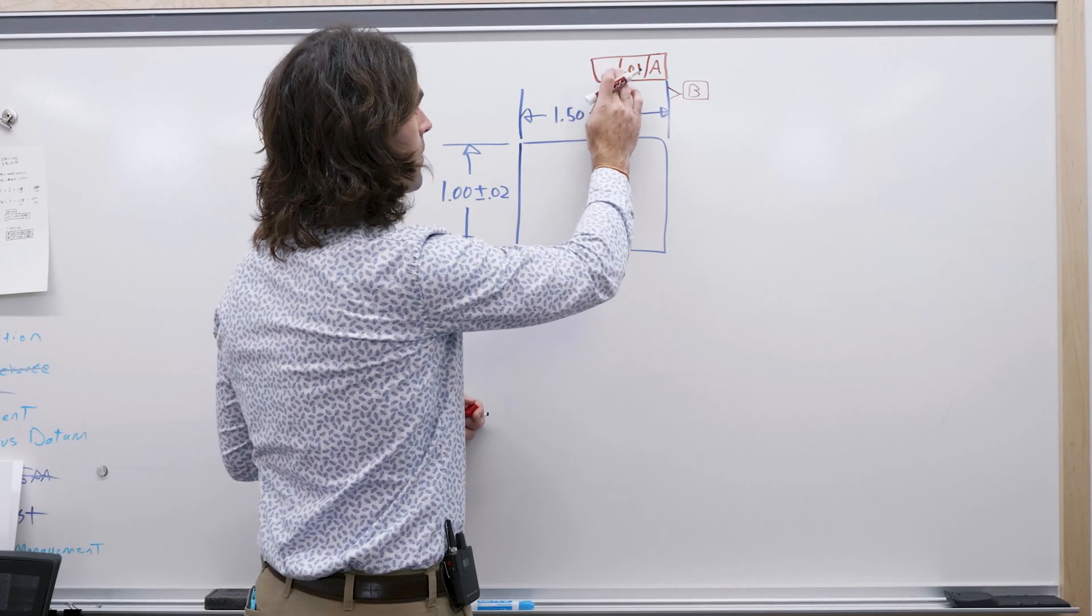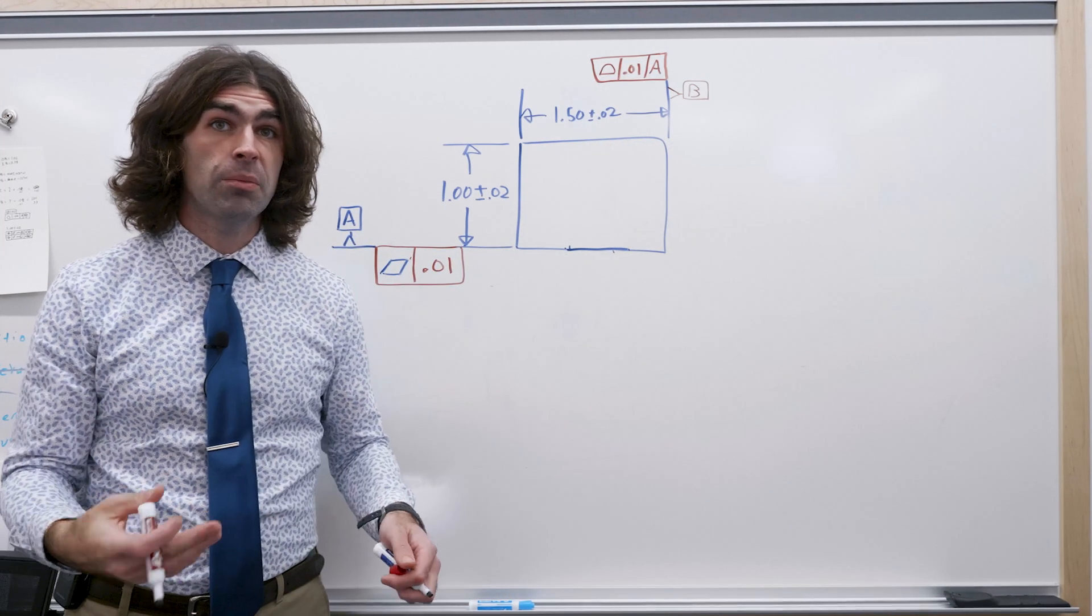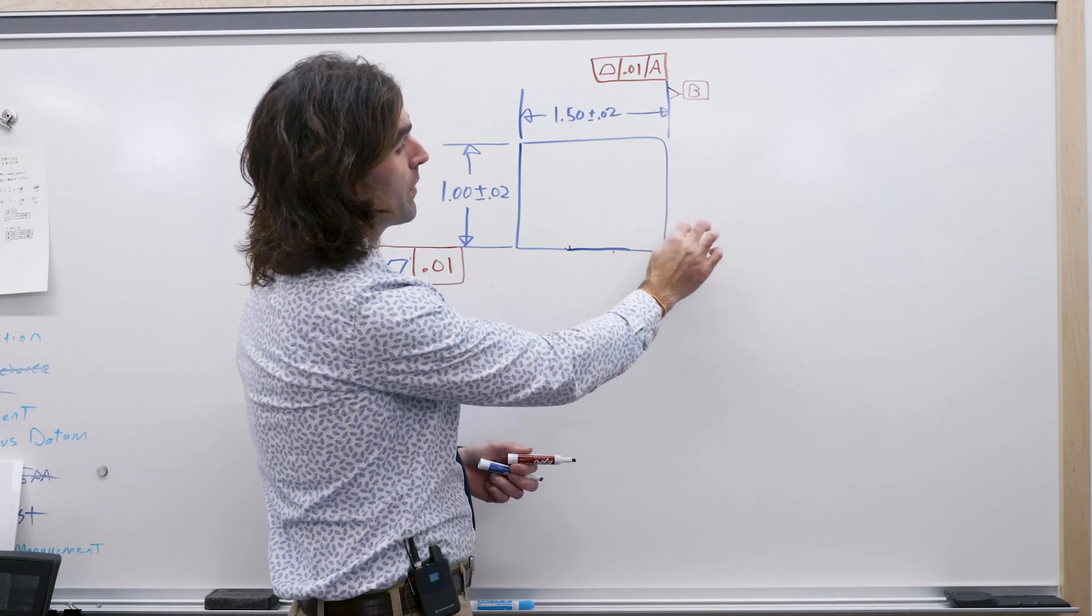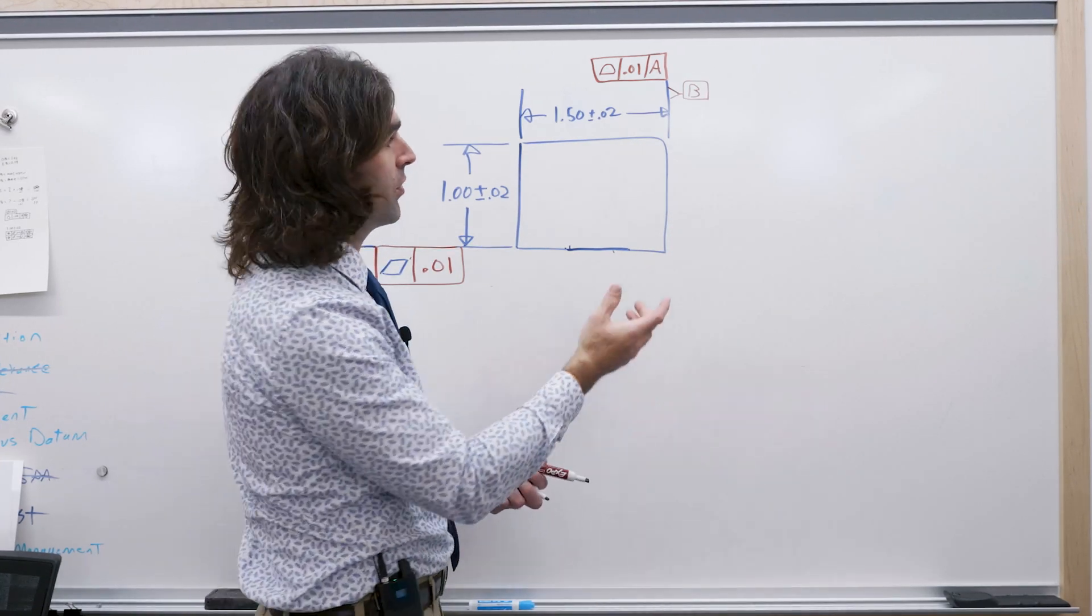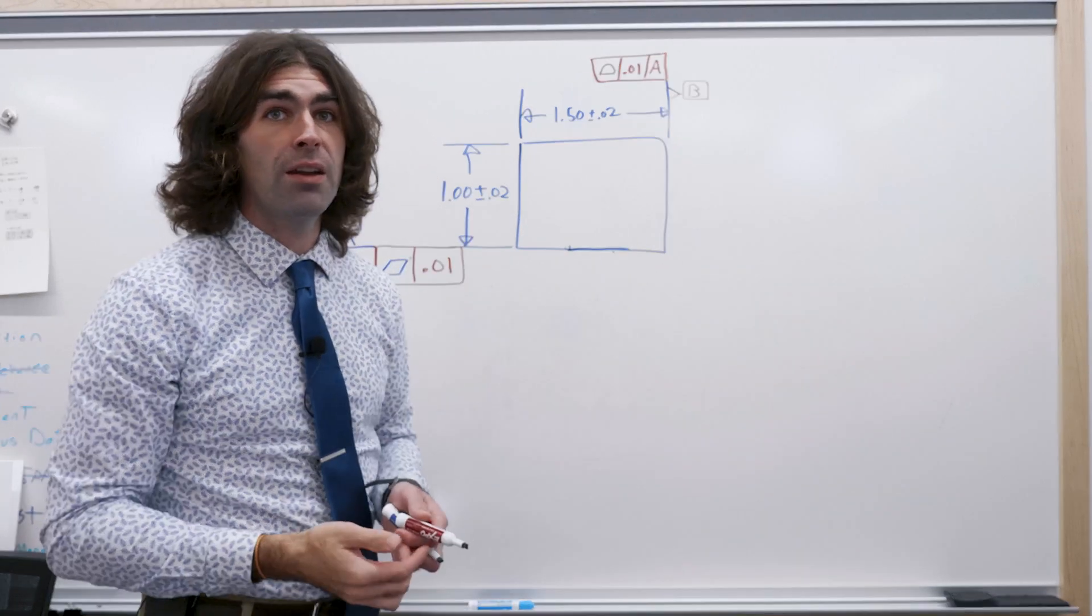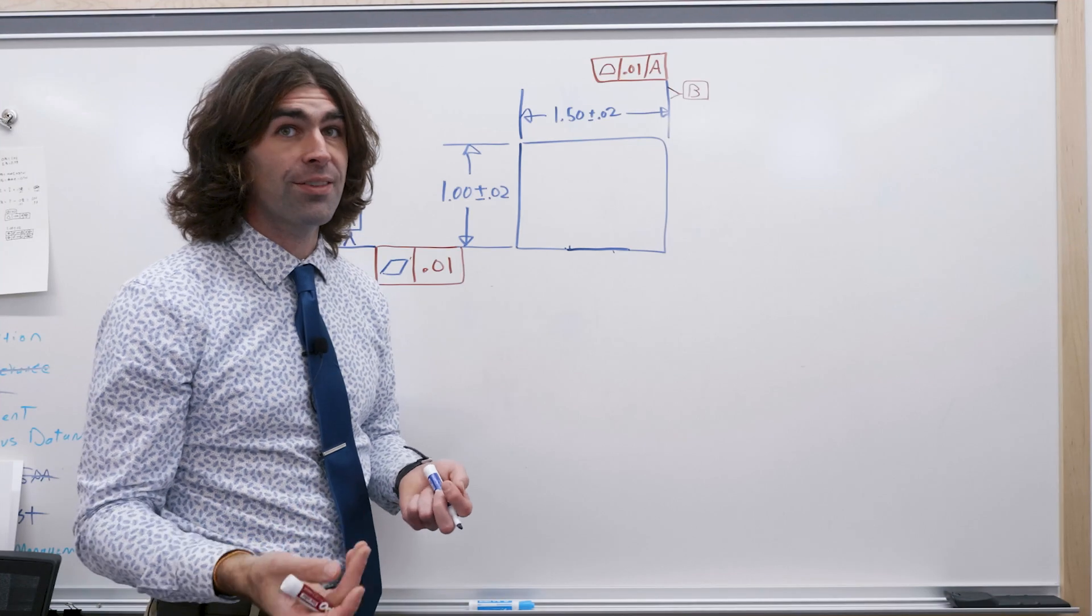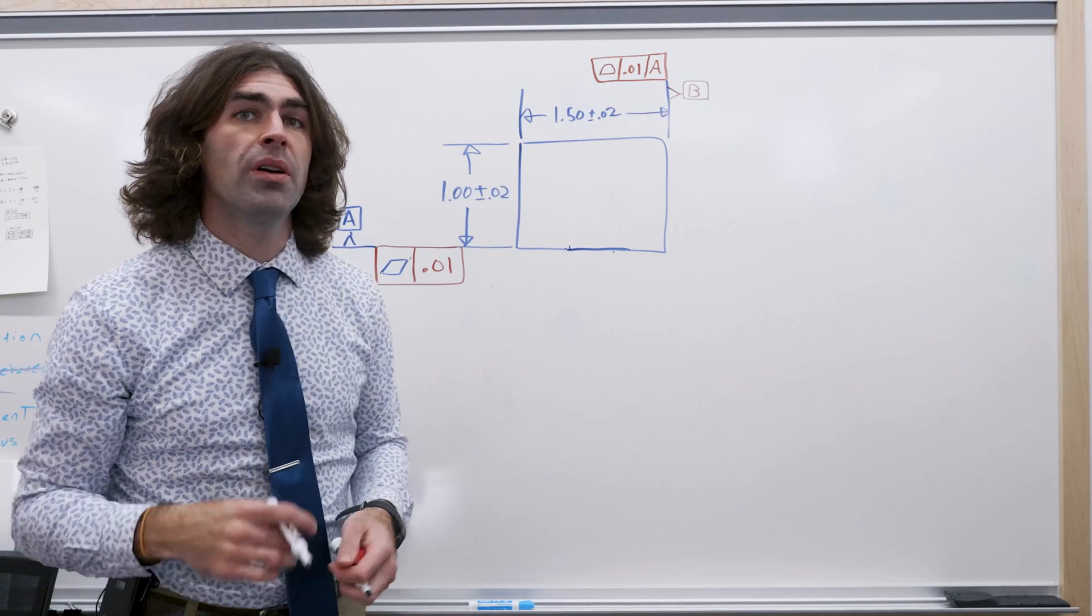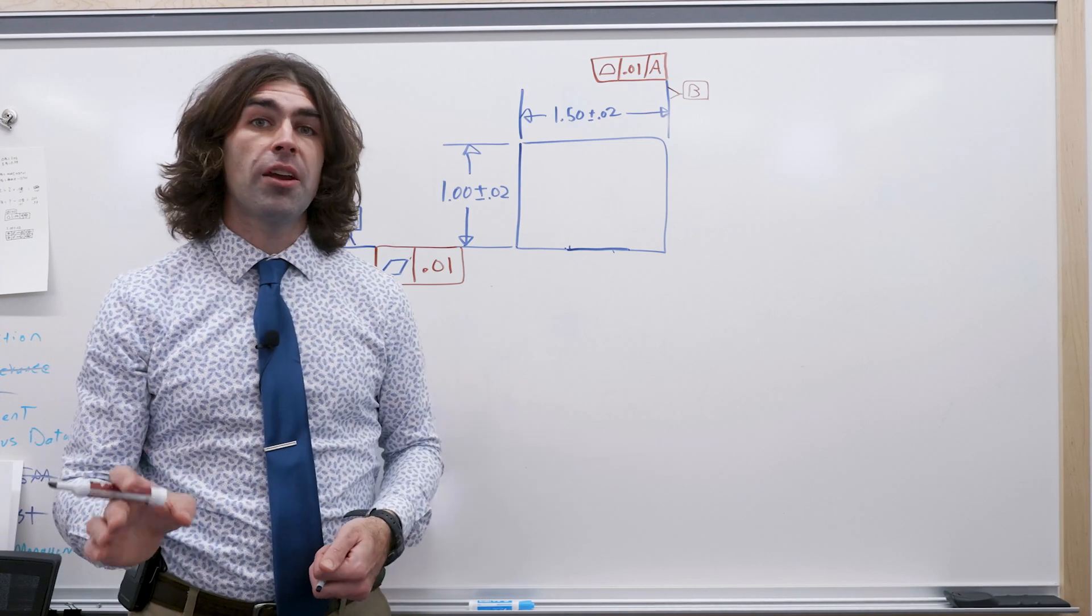If we change this to profile of a surface, it means the exact same thing as far as inspection goes. Our tolerance zone is going to be perpendicular to the surface. It ends up mirroring the basic profile, which in this case isn't controlled by a basic dimension, it's just the surface of the part as indicated on the drawing. Now there's no basic dimension here, so profile isn't controlling size, it's only controlling orientation. We know that because of the datum reference.